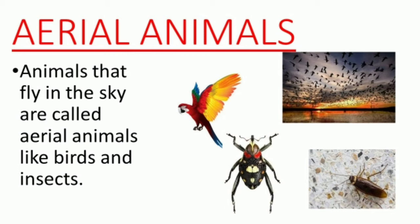And the last one is aerial animals. Animals that fly in the sky are called aerial animals, like birds and insects. Yaani, animals jo hawa mein, aasmaan mein urte hain, unhe hum aerial animals kehte hain. Jaisa ki all birds, ya phir insects. Example ke liye, parrot, sparrow, butterfly, caterpillar are its examples. One more thing — these animals have lightweight bodies and wings to fly. In animals ki bodies bohat halki hoti hain, taaki yeh fly kar sakein.